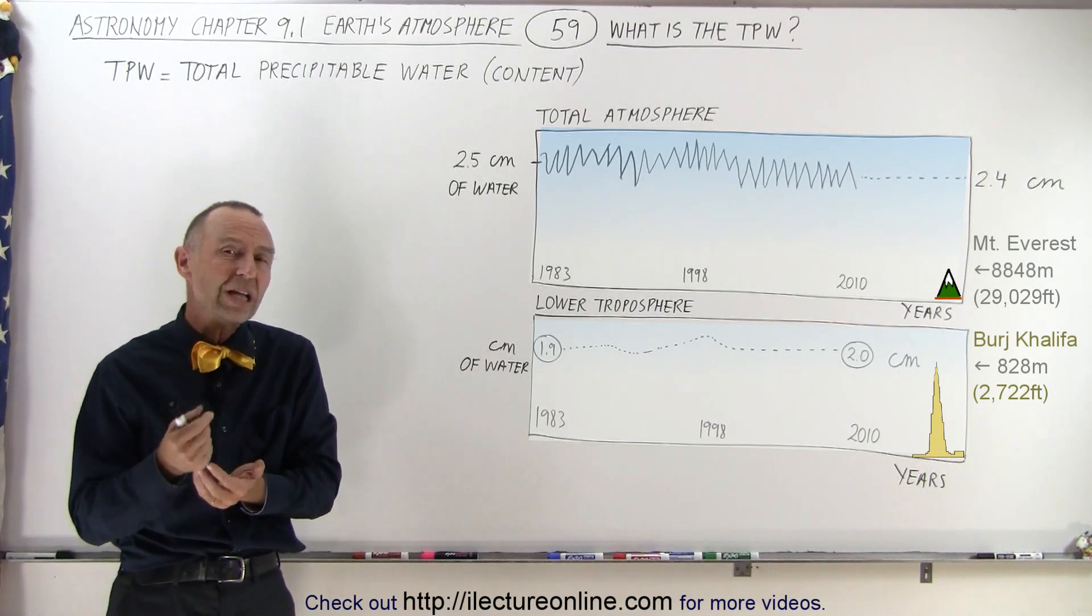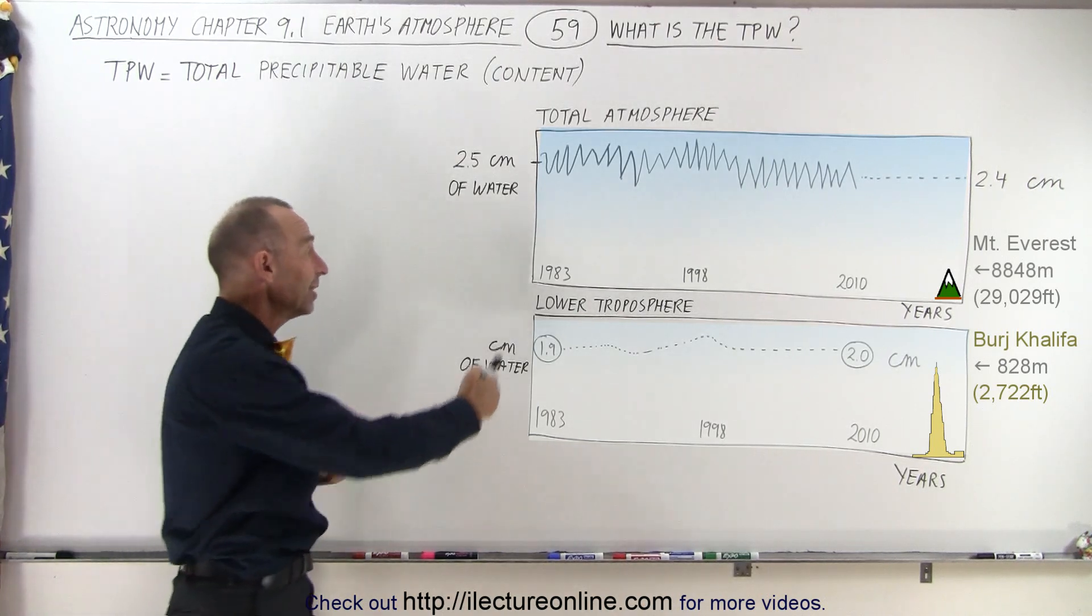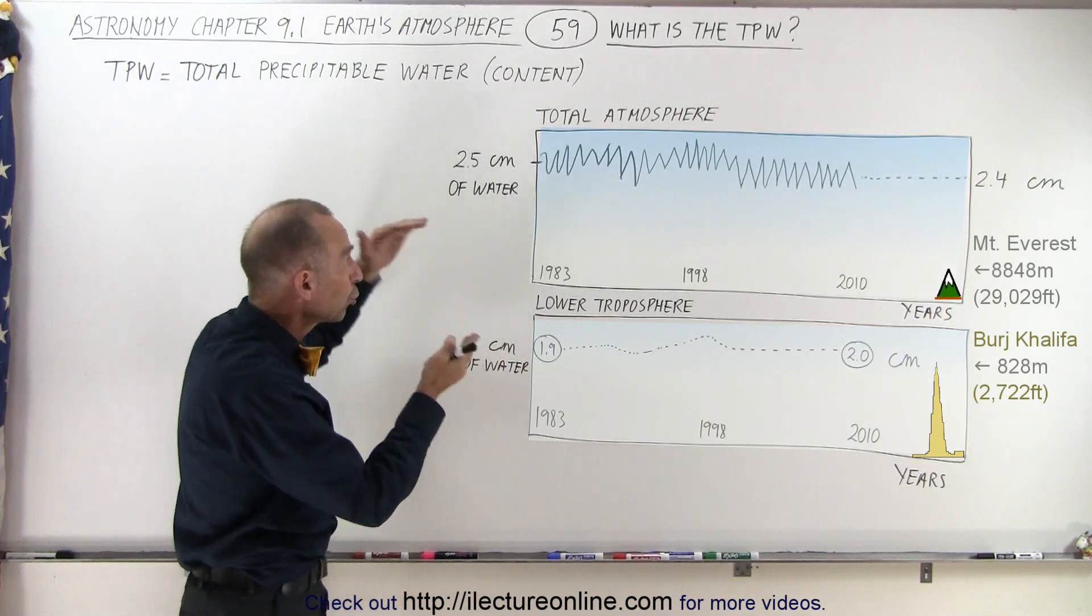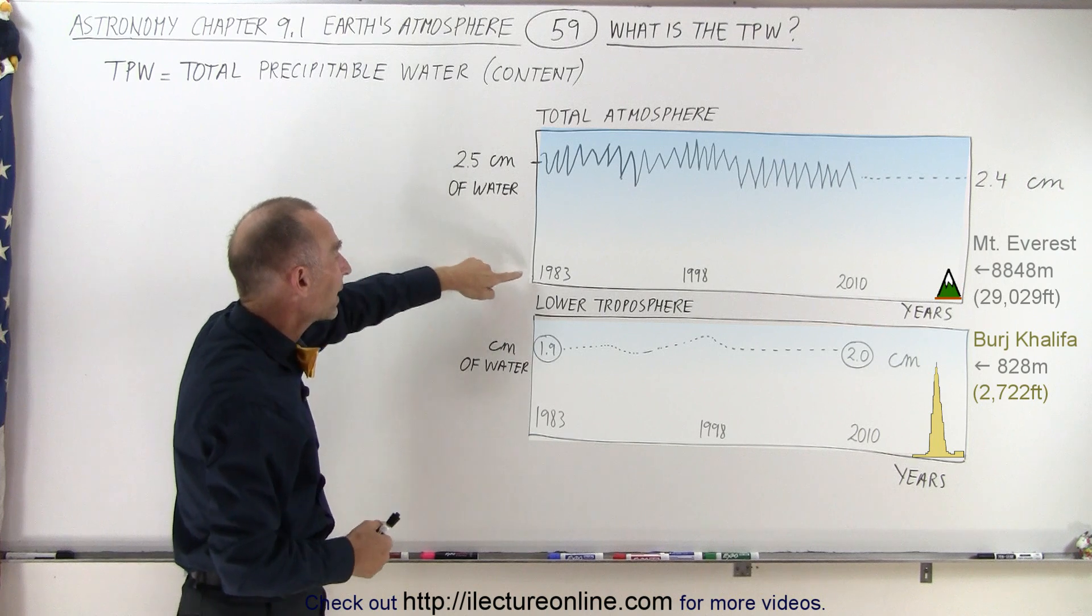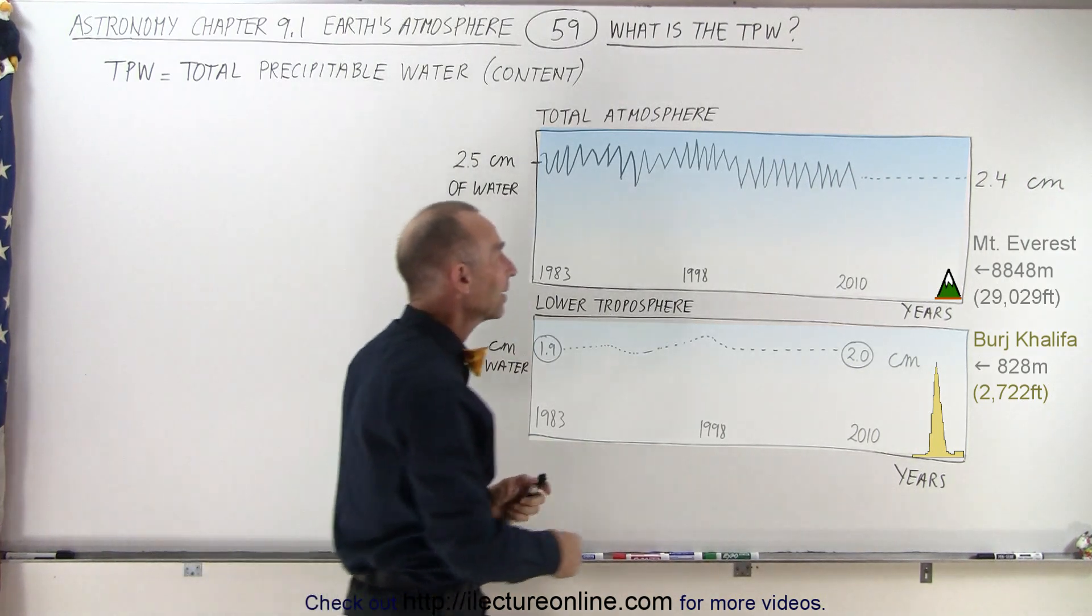But how has that changed since they started making measurements in 1983? Well, the total atmosphere content was about two and a half centimeters back in 1983, and by the time 2010 came along,